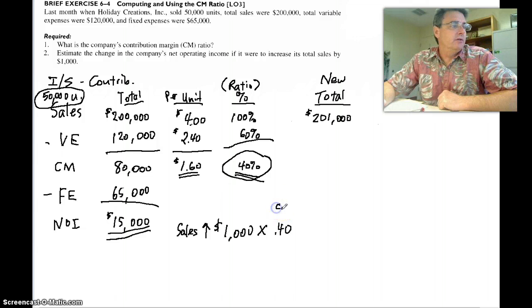And we have a contribution margin ratio of 40%. We just have to multiply. That's our contribution margin ratio. That will tell us the percent increase in our net operating income.